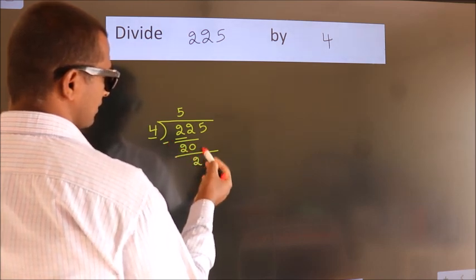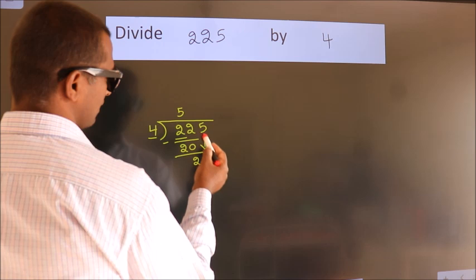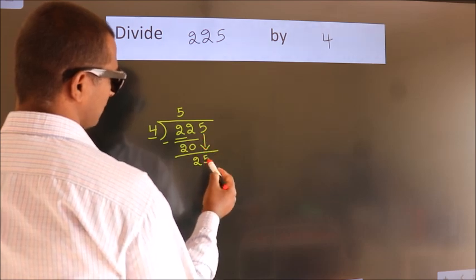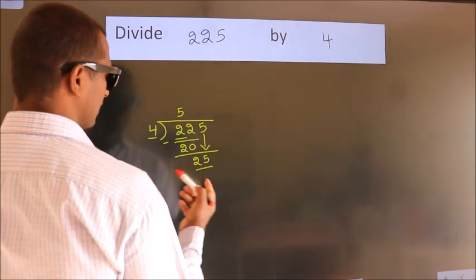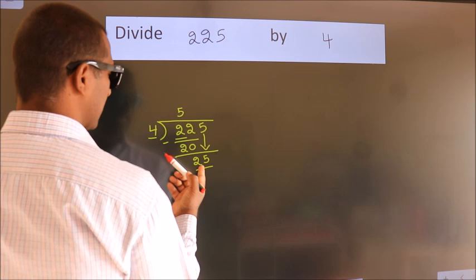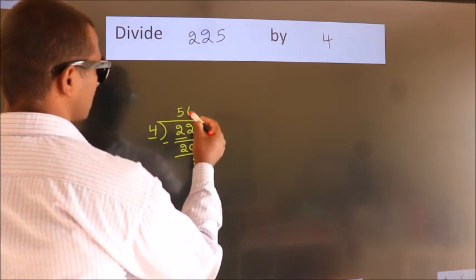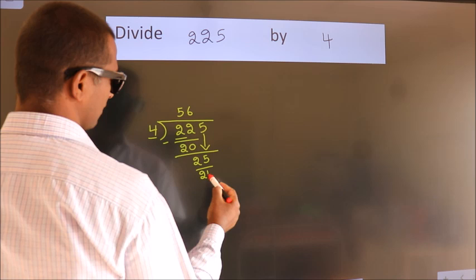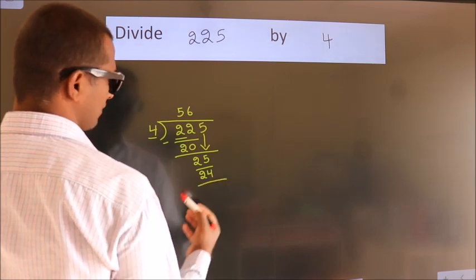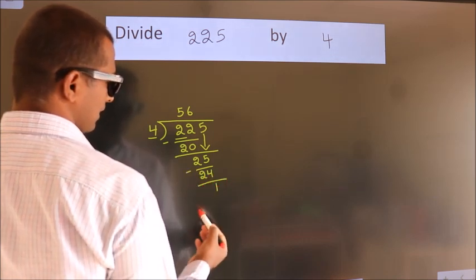After this, bring down the beside number, so 5 down. We have 25. A number close to 25 in the 4 table is 4 times 6 equals 24. Now we subtract and we get 1.